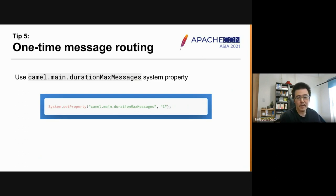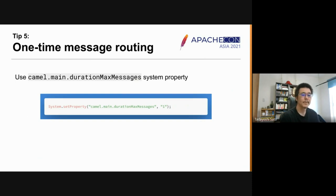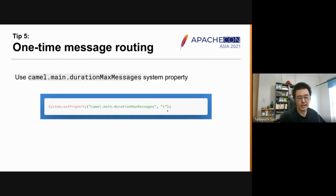This is not desirable for one-off scripting. Most of the time, you should expect it to process only one message and then immediately shut down. The CamelMain component has an option for this: set the `camel.main.durationMaxMessages` system property to one or some other fixed number. Once the route reaches the max number, it automatically shuts down.